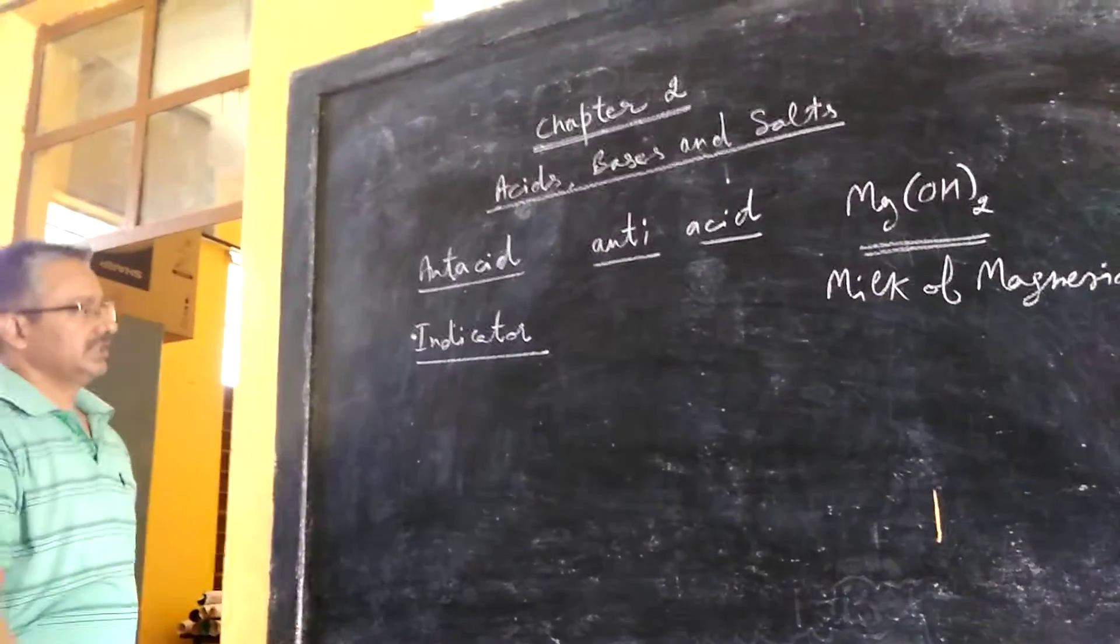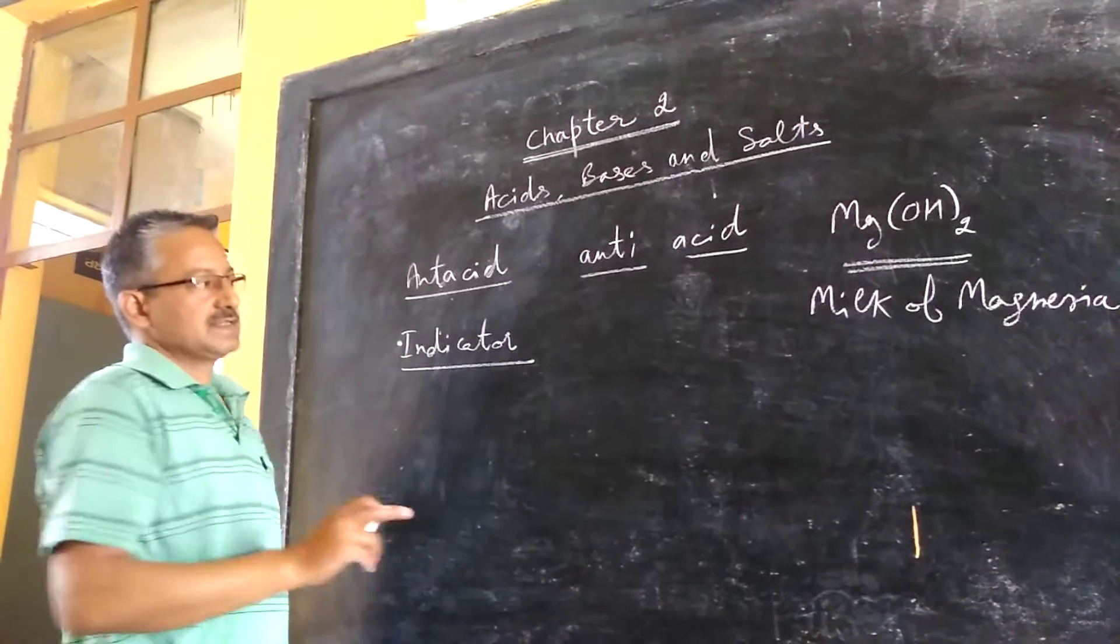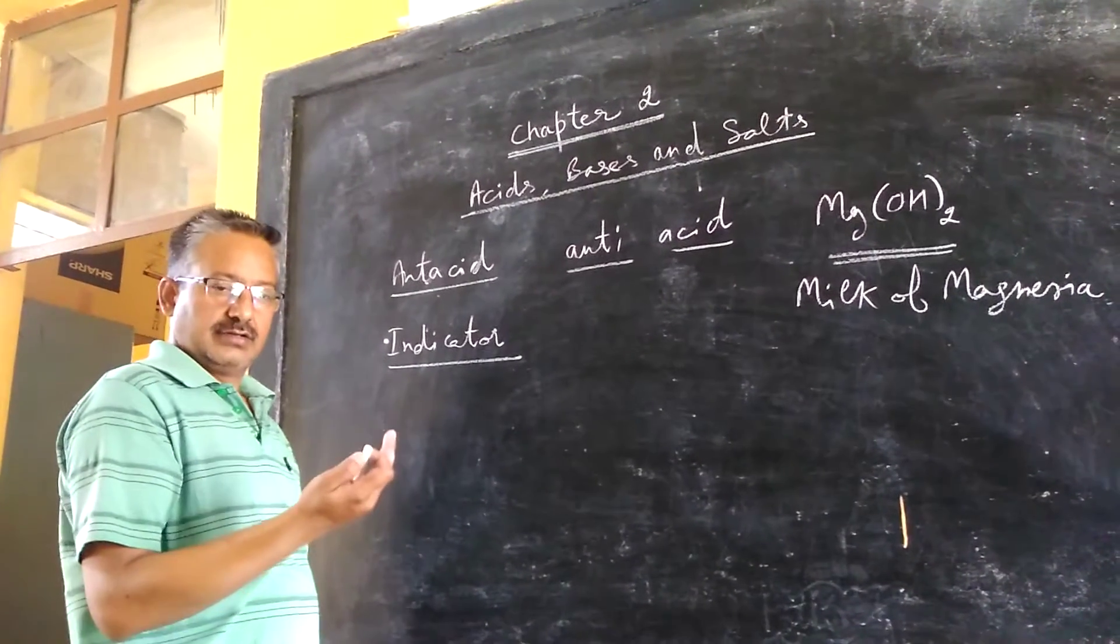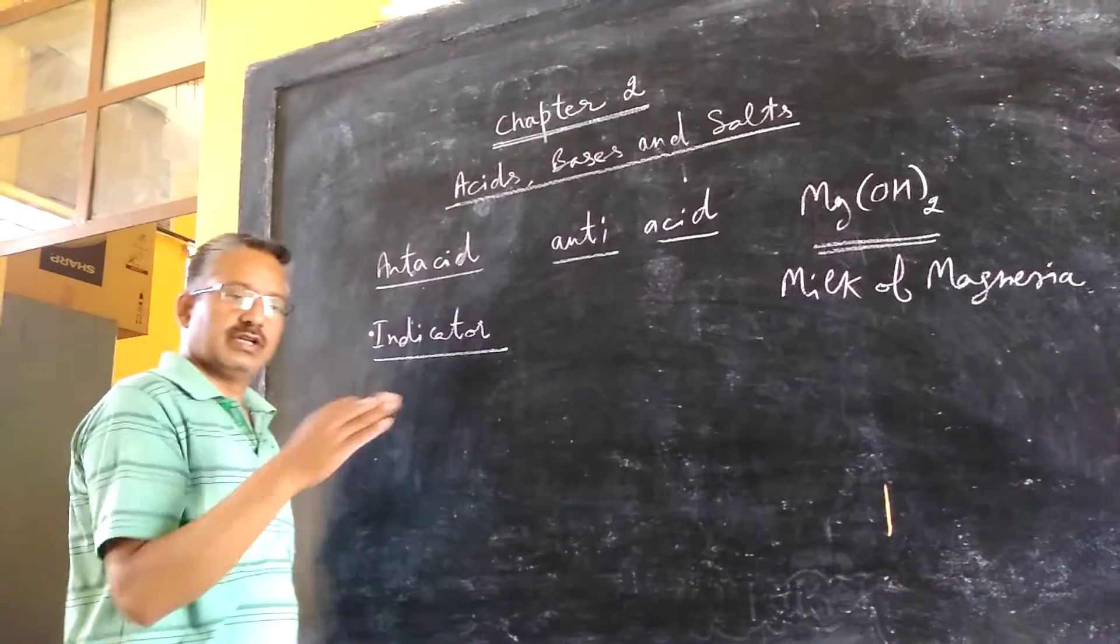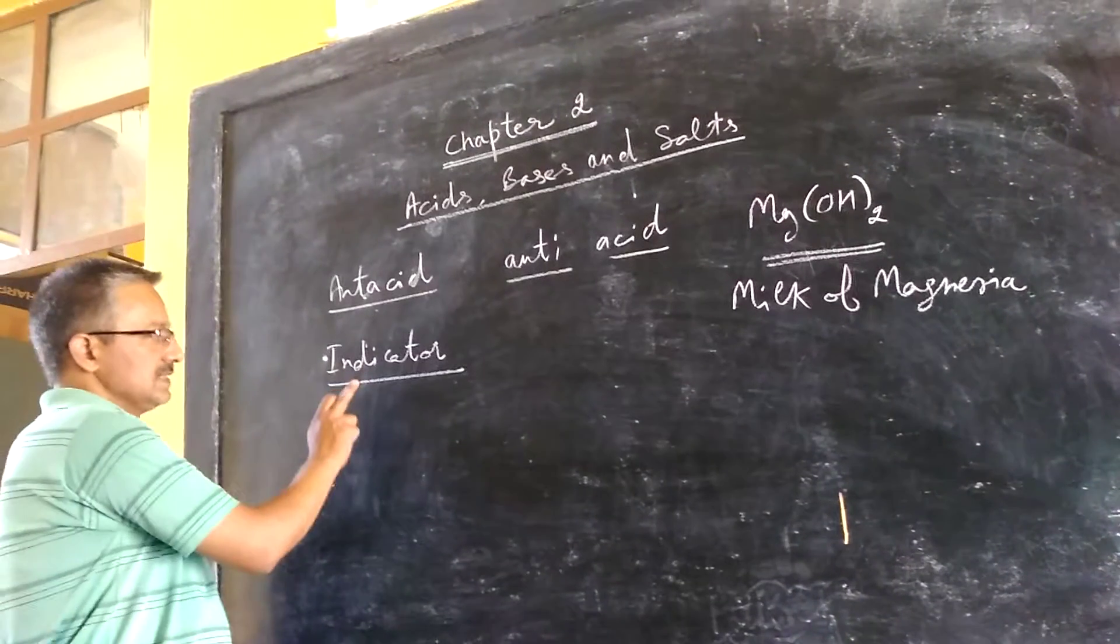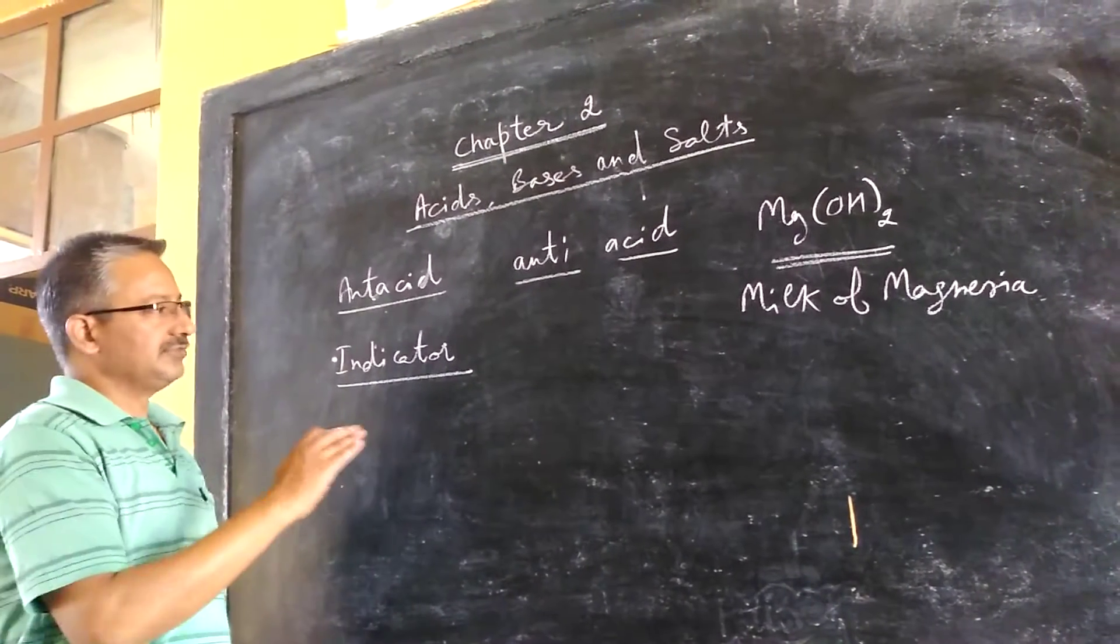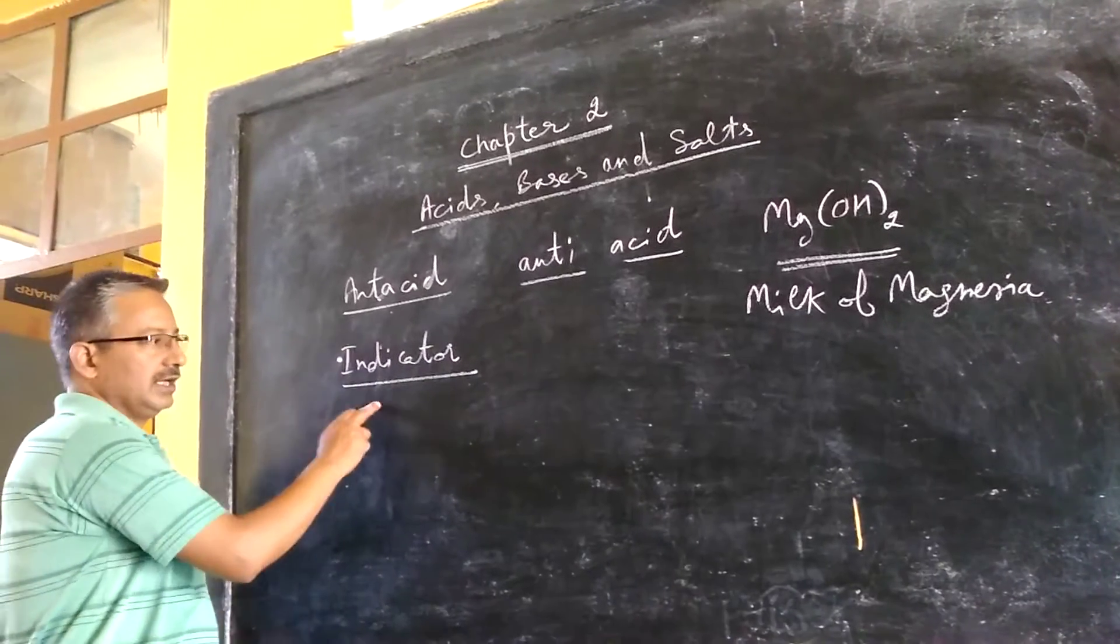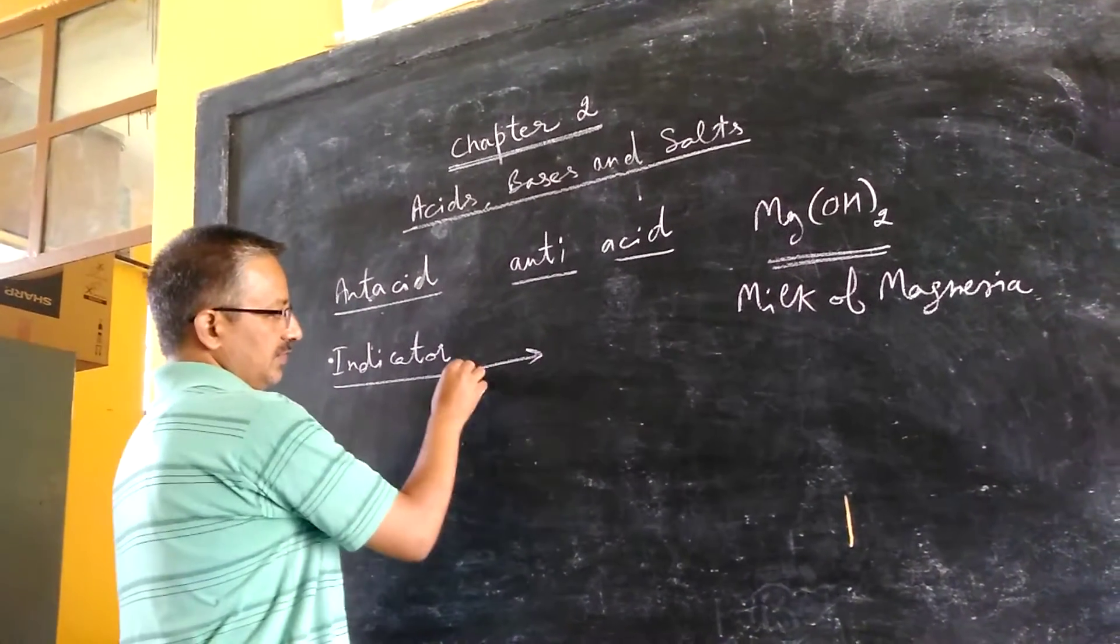Now one more thing: indicator. There are few substances which change color in different mediums. In case it is acidic medium then they will show another color. If it is basic medium then they will show another color. Such substances which show different colors in different mediums are known as indicators.